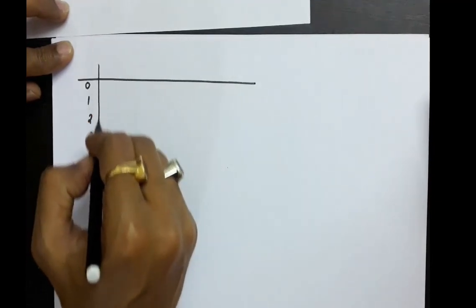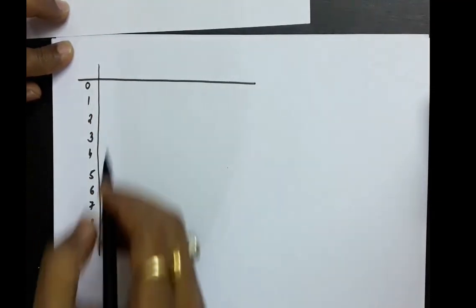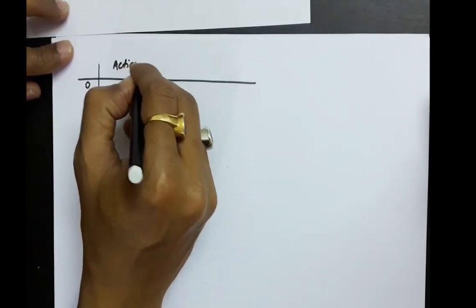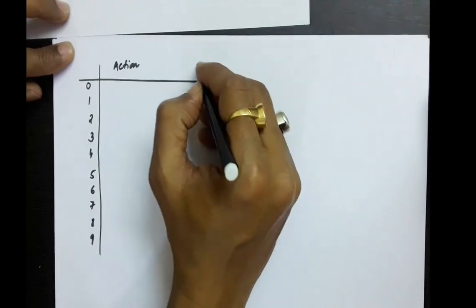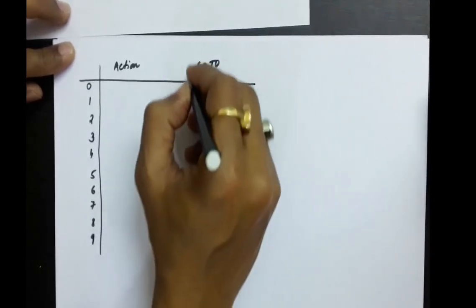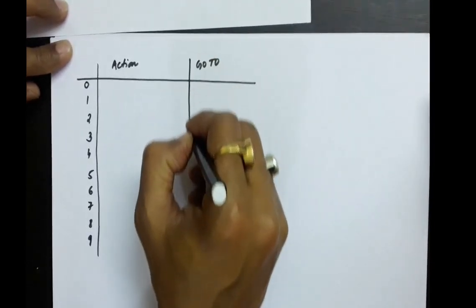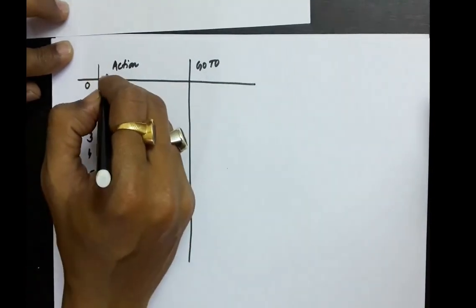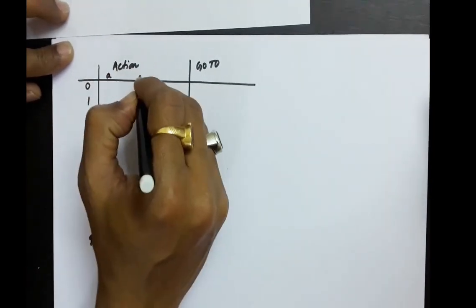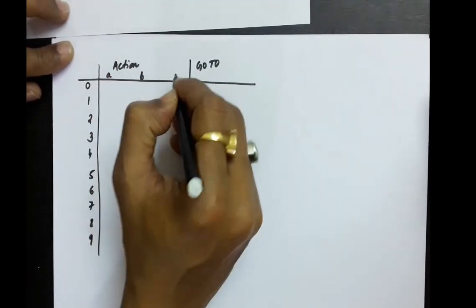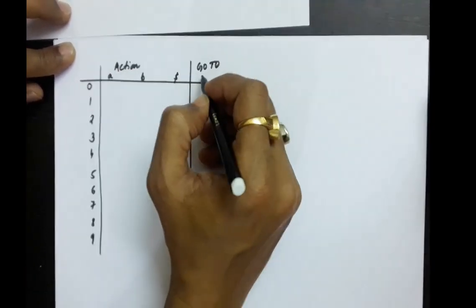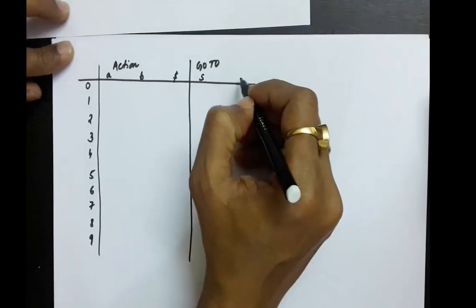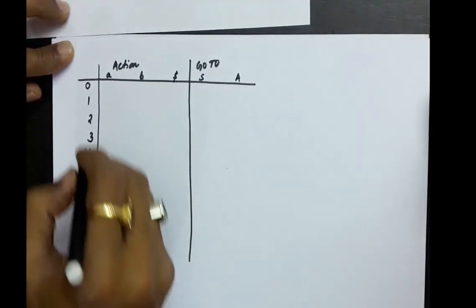The two parts in this passing table: one part is action, the other part is go to. In action, we will have all the terminal symbols. So, in this case, the terminal symbols are A, B, and dollar. In the go to part, we have capital S and capital A.